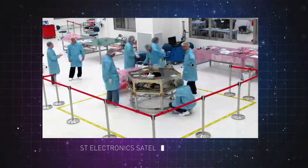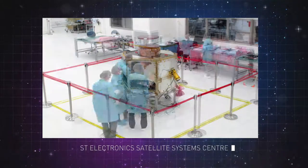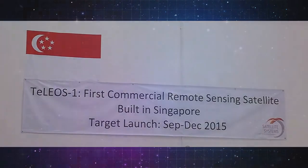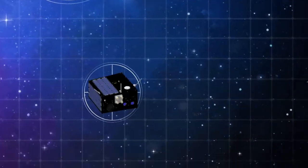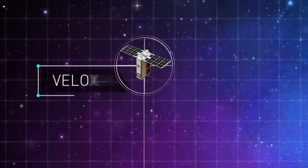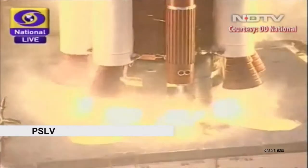TELIOS-1 is Singapore's first commercial near equatorial orbit Earth observation satellite. Scheduled to be launched in 2015, together with TELIOS-1, a total of six satellites will be launched on board Indian Space Research Organisation's Polar Satellite Launch Vehicle.